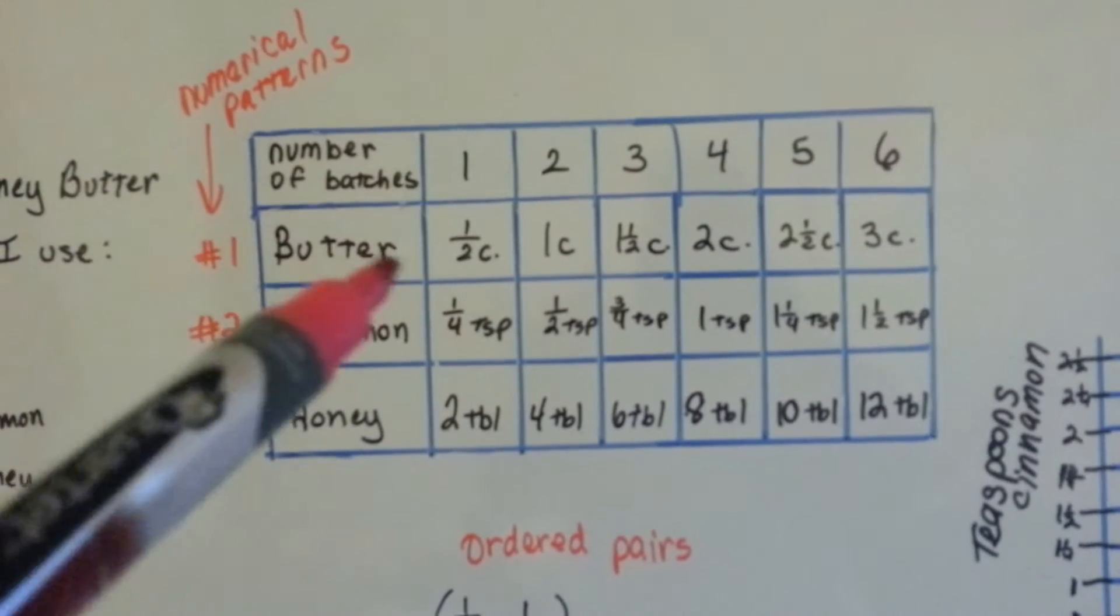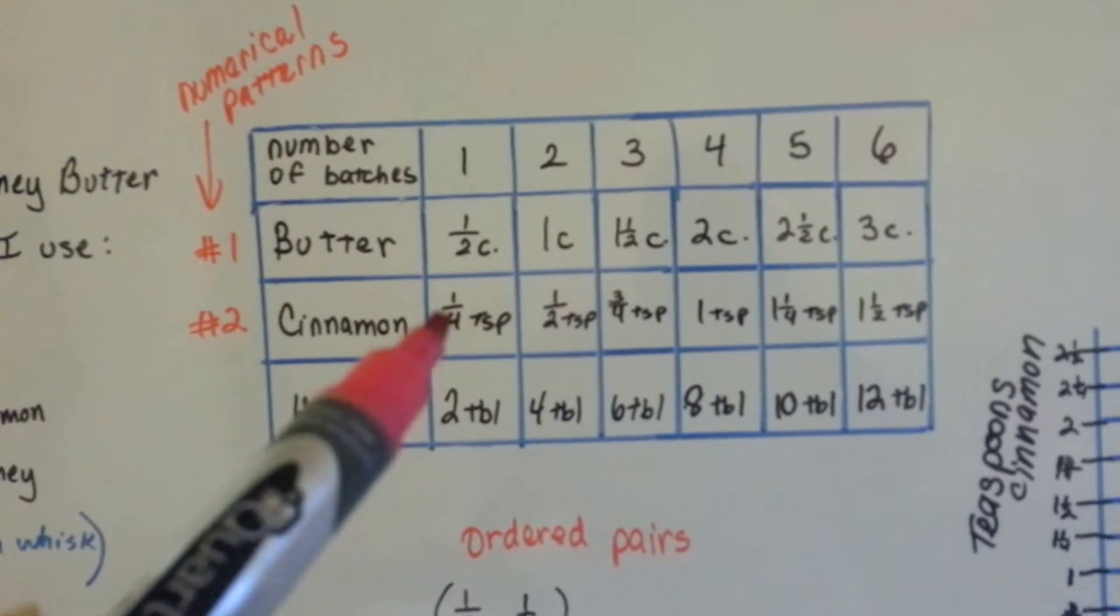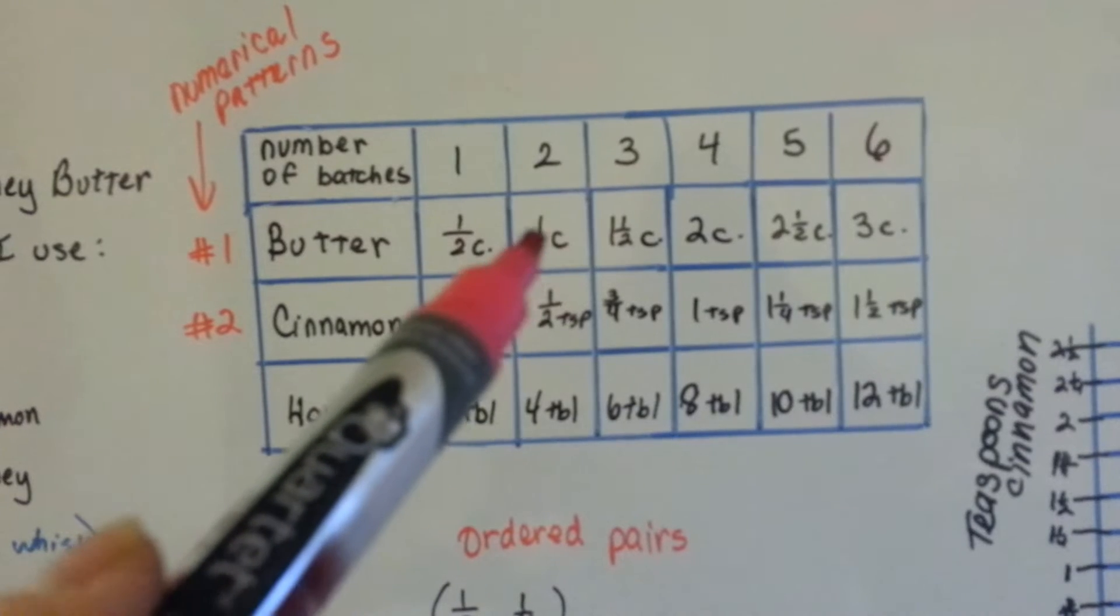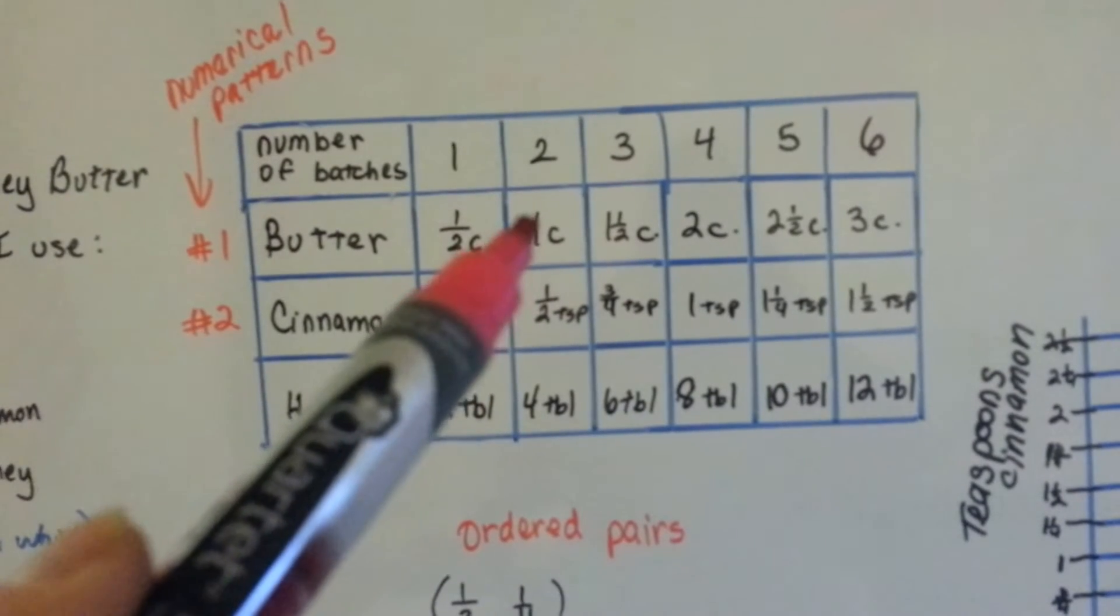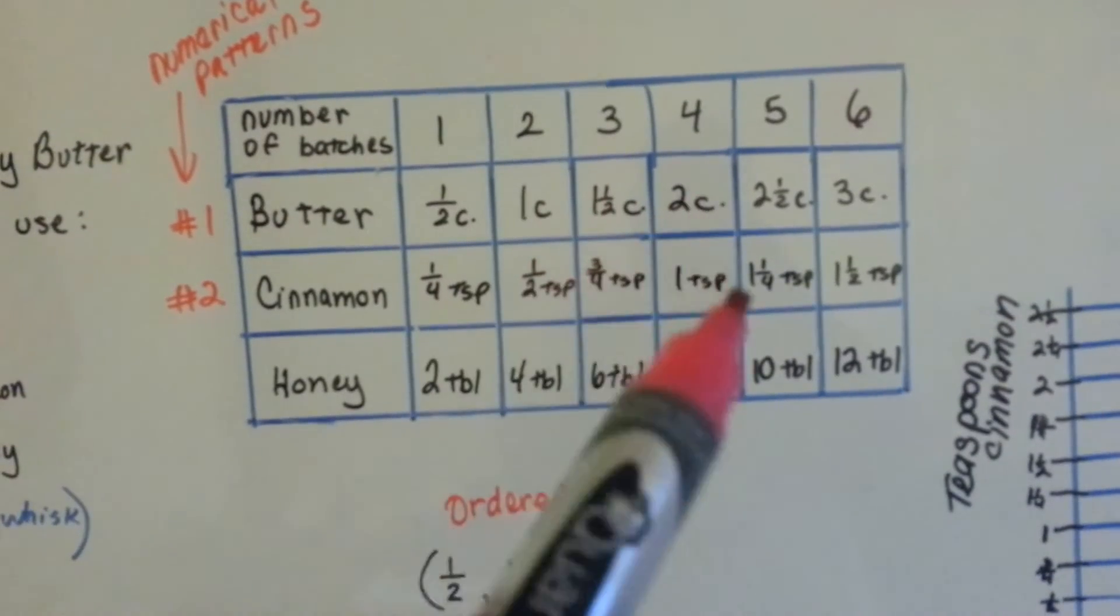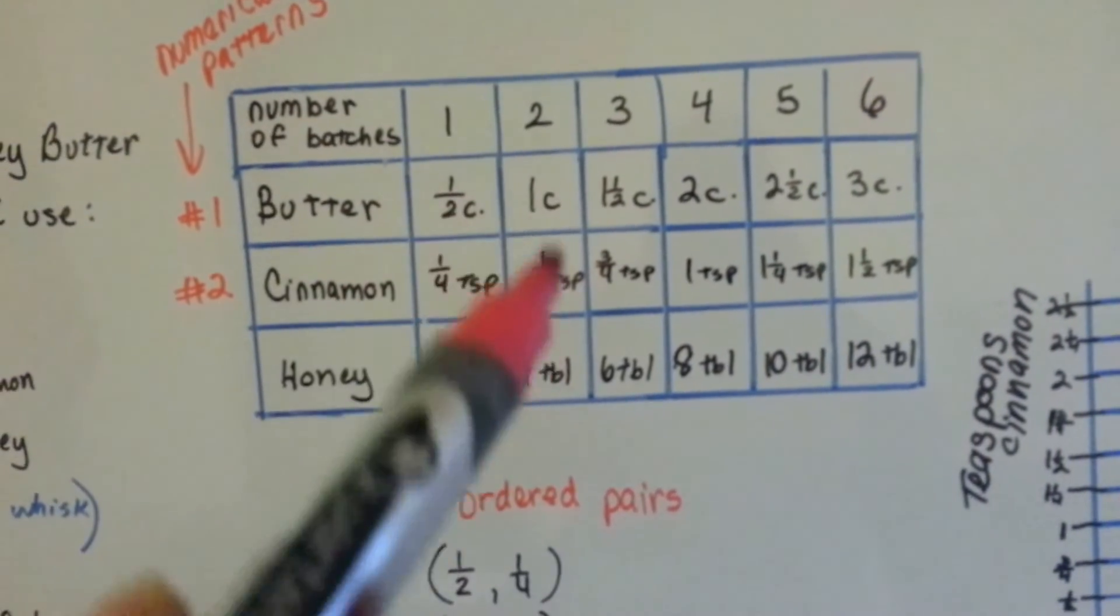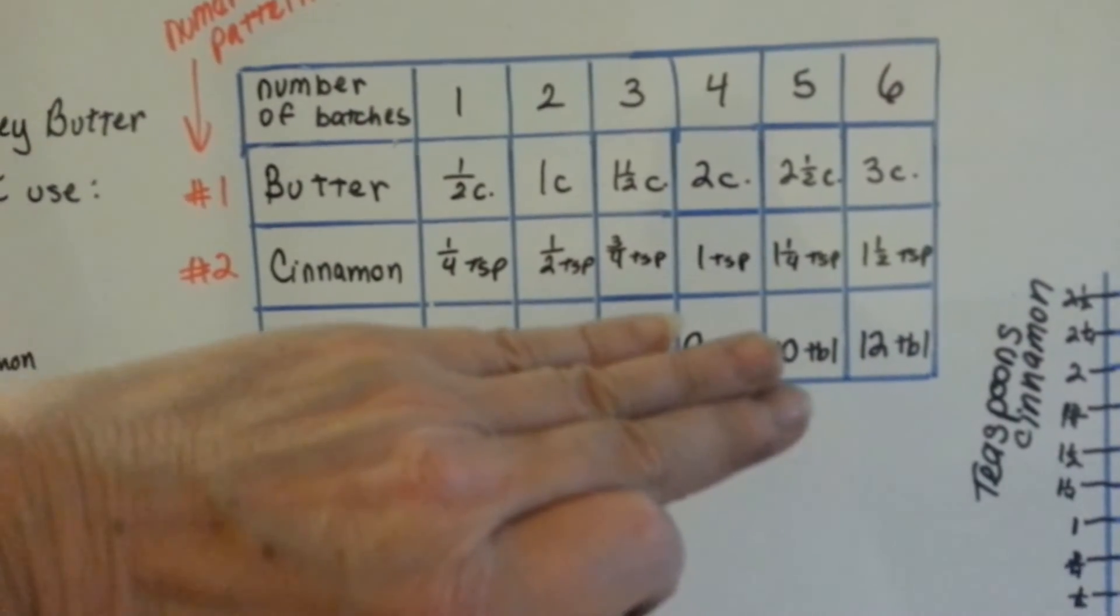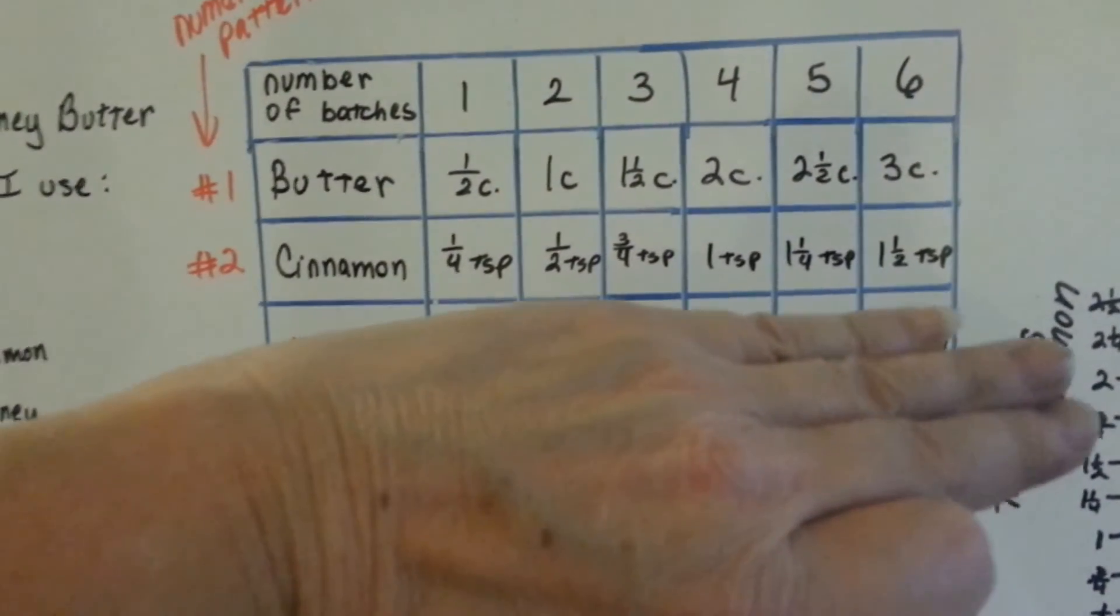If I make one batch, I need a half cup of butter and a quarter teaspoon of cinnamon. If I make two batches, I need one cup of butter and a half teaspoon of cinnamon. Now we're going to look for the relationship between the butter and the cinnamon. Don't pay attention to the honey right now; that's just up there for fun.